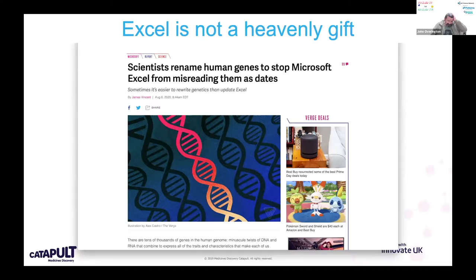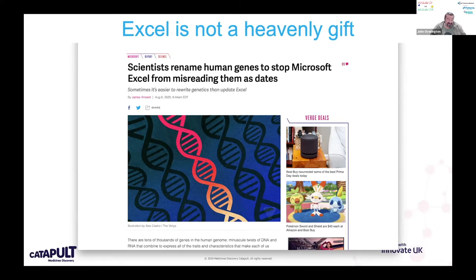A couple of slides making some points in a slightly different way. Excel is really not a gift from above — it's one of the worst tools for data handling and storage. The most ubiquitous and well-known issue in life science is this: Excel, and Apple's Numbers spreadsheet too, converts anything that looks like a date into a date in an essentially one-way lossy trip. Recently, some of the guys who've named genes have finally given up and decided not to have gene names that look anything like dates, because Excel just mangles them.